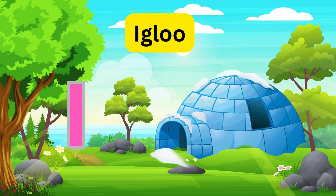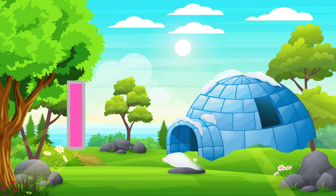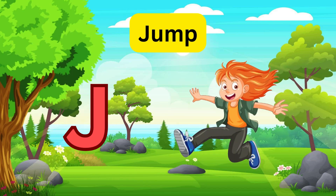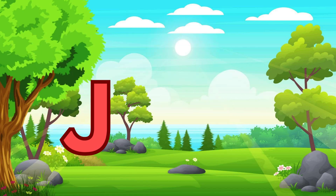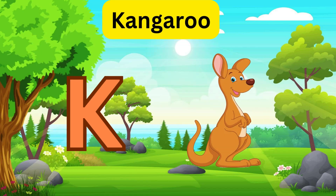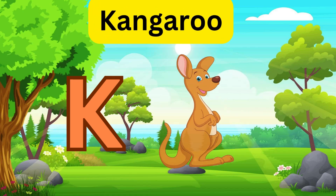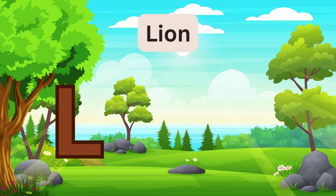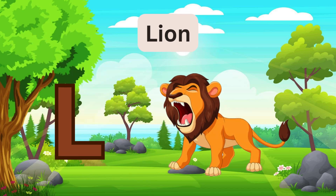I is for Igloo, I-I-Igloo. J is for Jump, J-J-Jump. K is for Kangaroo, K-K-Kangaroo. L is for Lion, L-L-Lion.